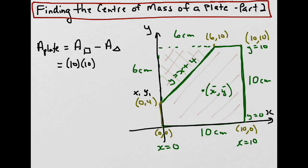And the area of the triangle would be half the base times the height, so that would be half, the base is 6, and the height is 6.